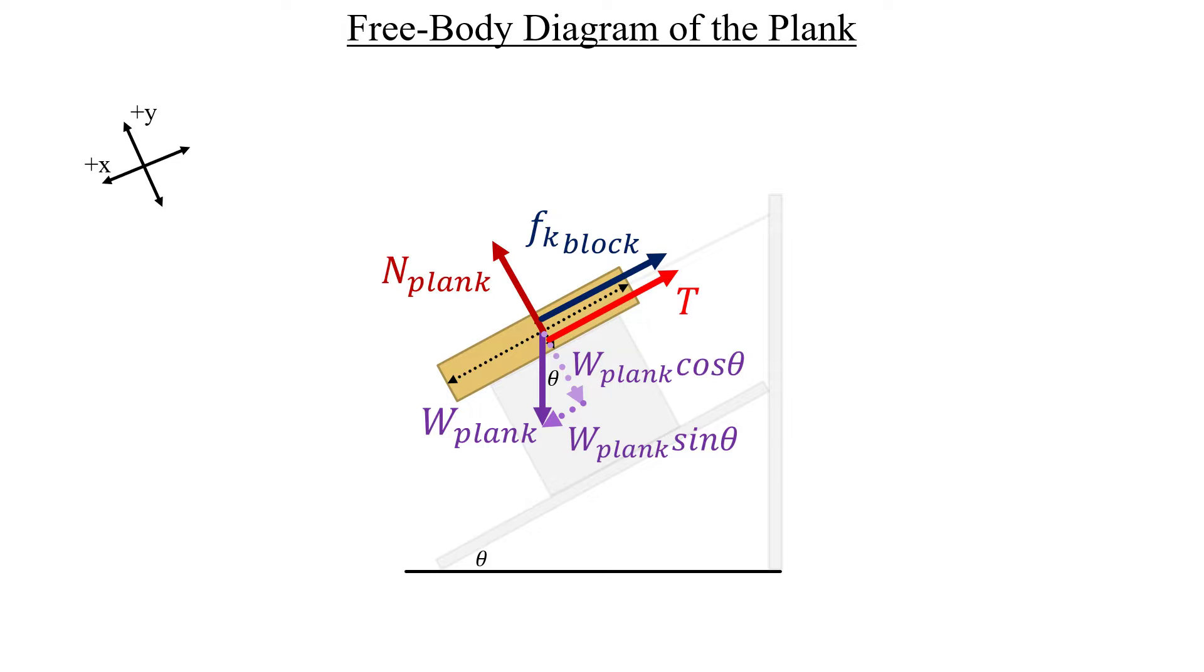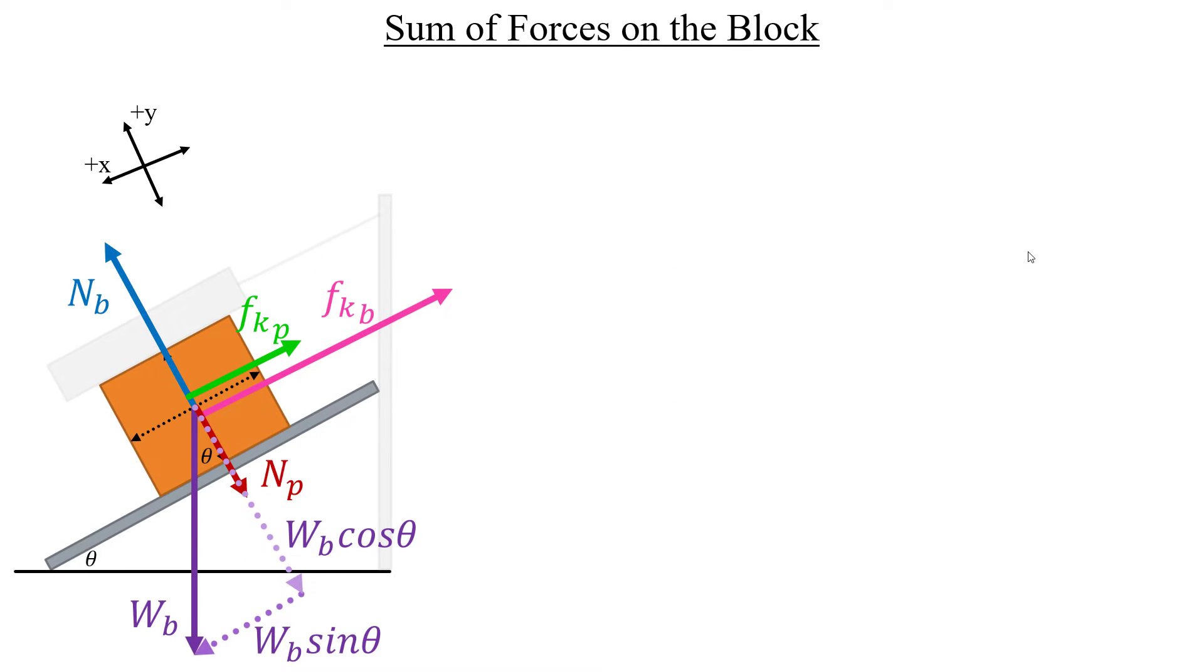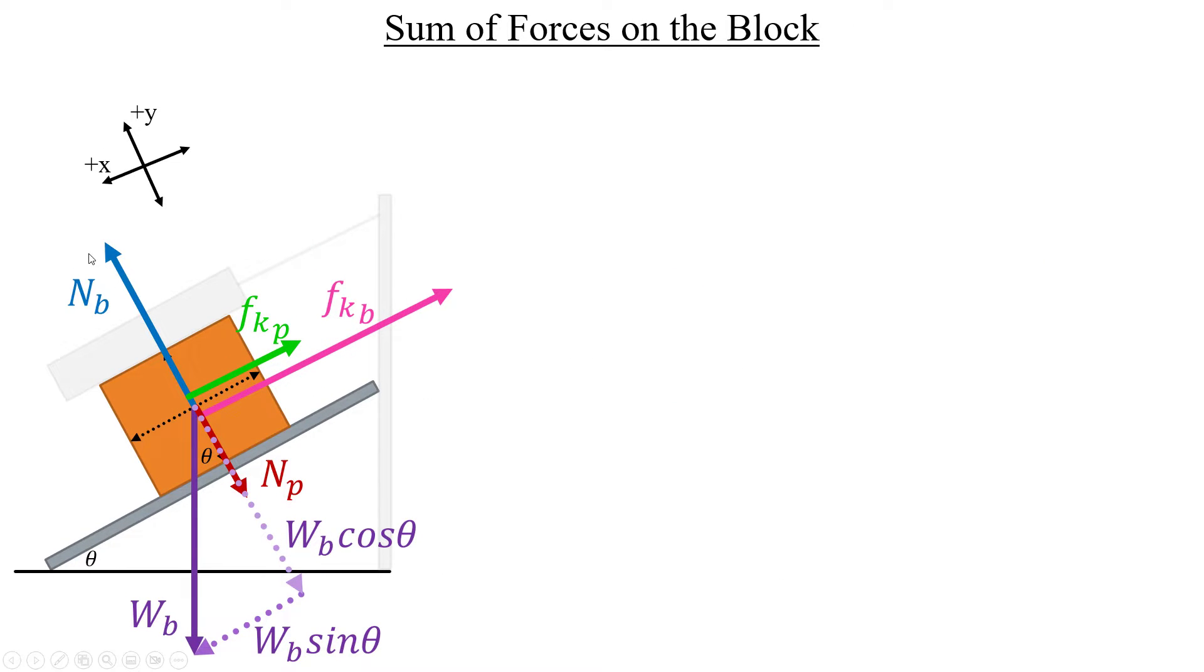Let's move on to the sum of forces, so that we can now answer part B. And I'll start off with the block here. You'll notice that some of the labels have changed. I've had to truncate some of the subscripts, so that it doesn't take up too much room. Wherever you see B, that means block. Whenever you see P, that means plank. Pretty easy there.